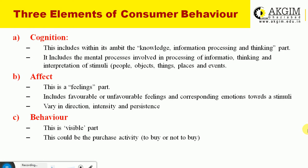The second element is affect, which is again not very visible. This is the feeling part — it includes favorable or unfavorable feelings and corresponding emotions toward stimuli. This affect varies in direction, intensity, and persistence. The third element is behavior, which is the visible part — marketers can see this in the purchase activity of consumers: whether to buy or not to buy, recommending or not recommending, switching brands or retaining and repeating the same brand.